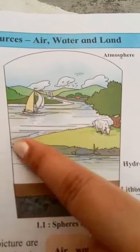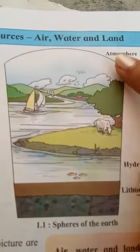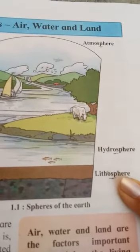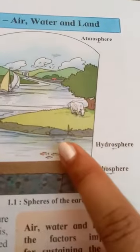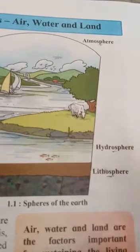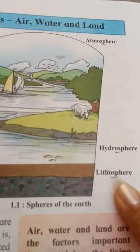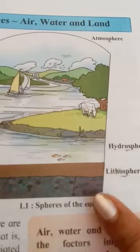Now observe this picture carefully. This is the atmosphere, this is the hydrosphere, and this is the lithosphere. Atmosphere means air, hydrosphere means water, and lithosphere means where stones and soil are present.